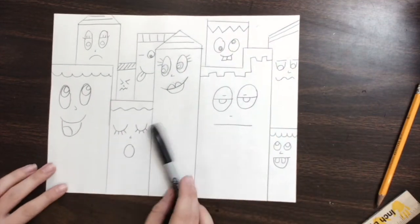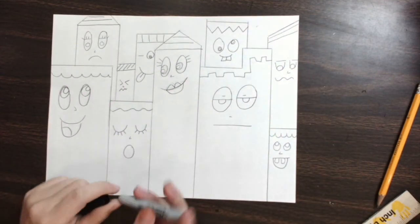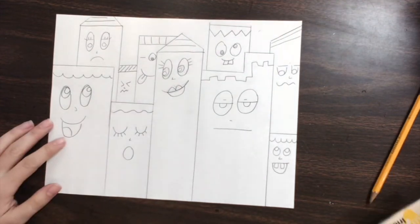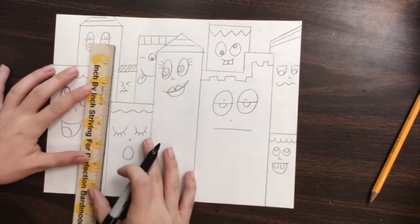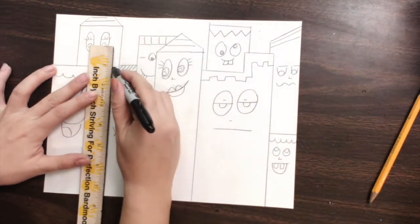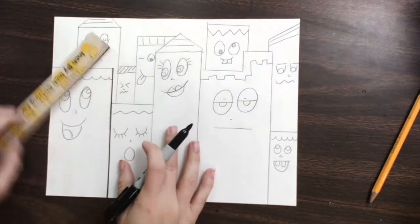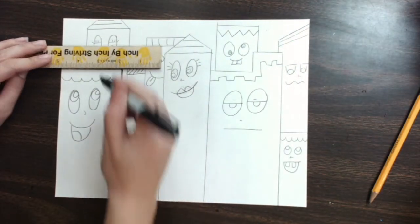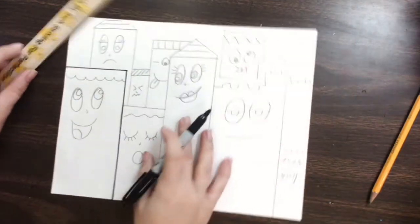Alright, next we get to draw with our Sharpie. That's our last step for this part of the lesson. So I'm going to go ahead and I'm going to start tracing all of my lines. That's what I'm going to do now.